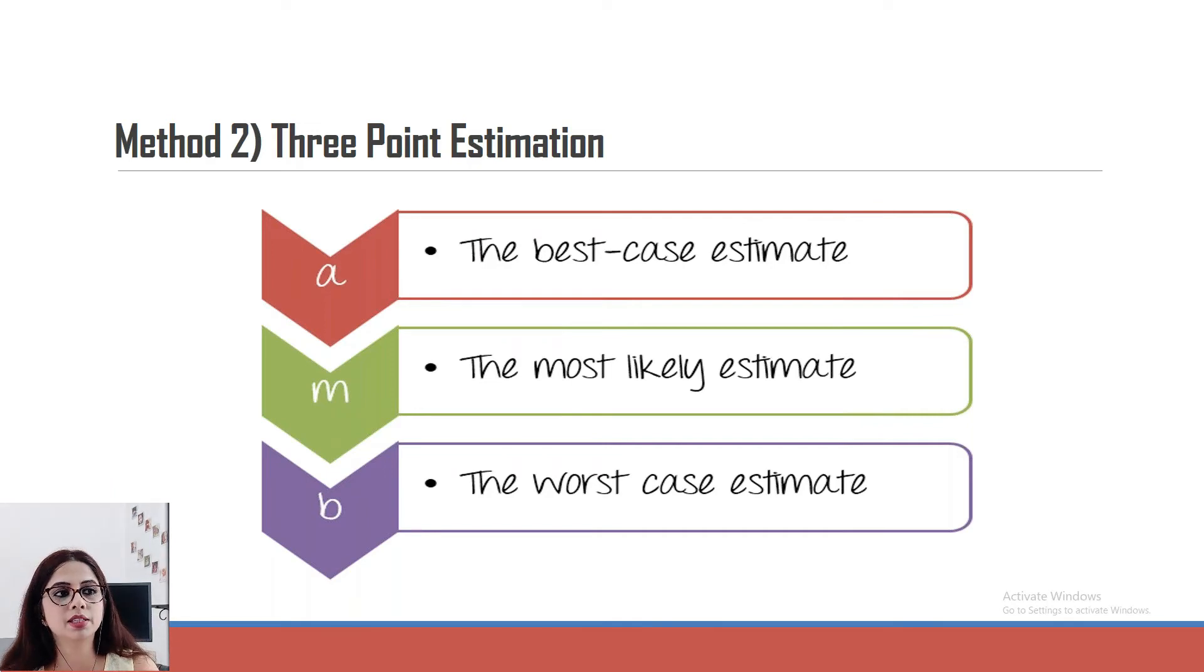Because if somebody is saying that only the best case estimations have been done amongst the teammates, it might be a wrong calculation of the efforts and the team can be in a wrong impression that the work will be finished earlier, but most likely they might need more time. So that's what three-point estimation is.